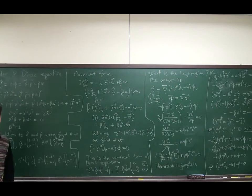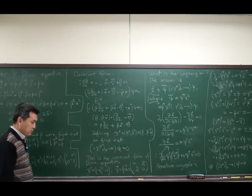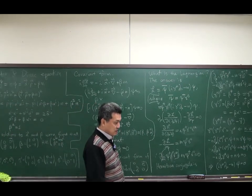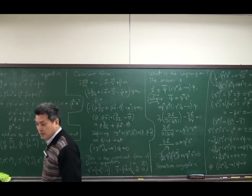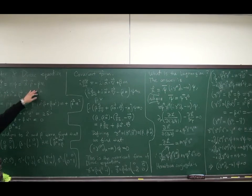Hamiltonian is linear in momentum multiplied by some matrix and linear in mass multiplied by some matrix. And we have shown that only from 2x2 matrix, 4x4 matrix, such kind of matrix exists. The reason is that the square of this Hamiltonian must reproduce the energy-momentum relation.